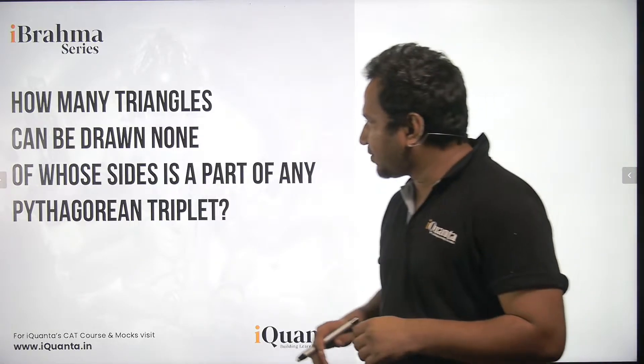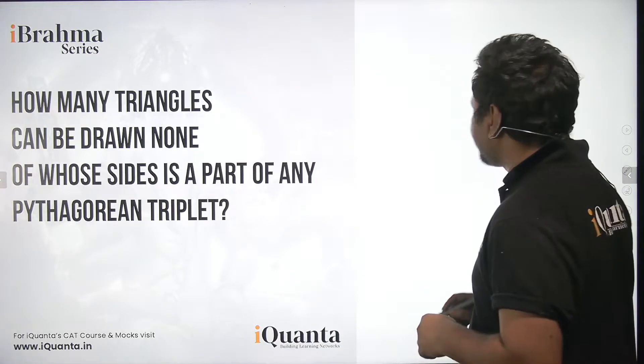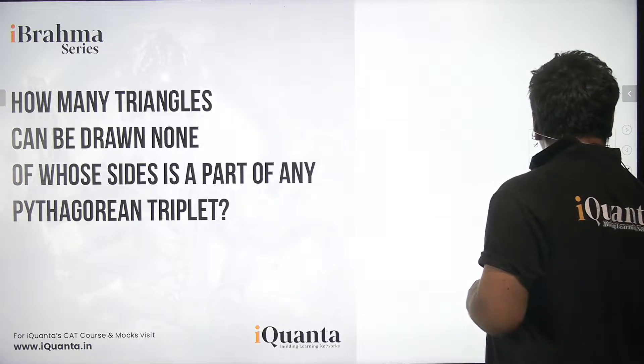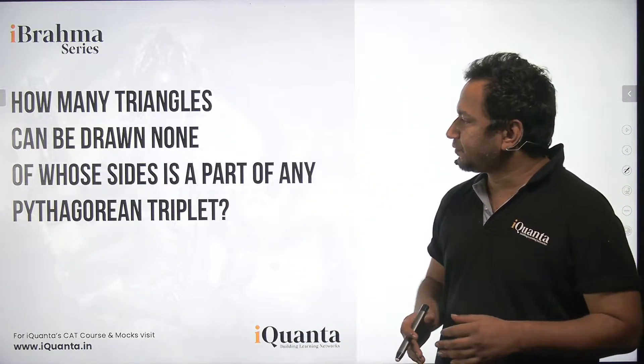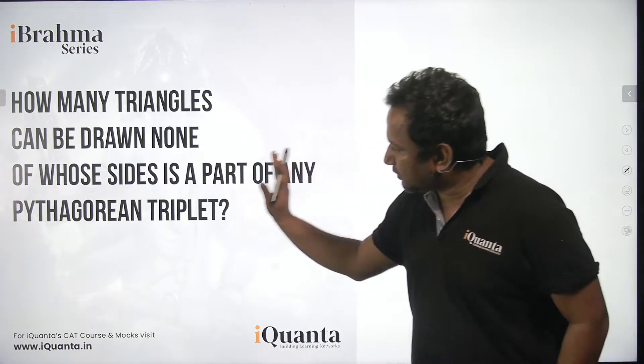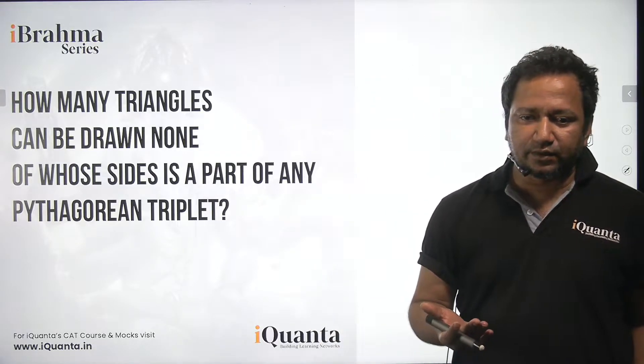The question here says how many triangles can be drawn, none of whose sides is a part of any Pythagorean triplet. Well, first of all let us understand the equation. So there can be n number of triangles and the condition over here is that none of its sides should be a part of any Pythagorean triplet.